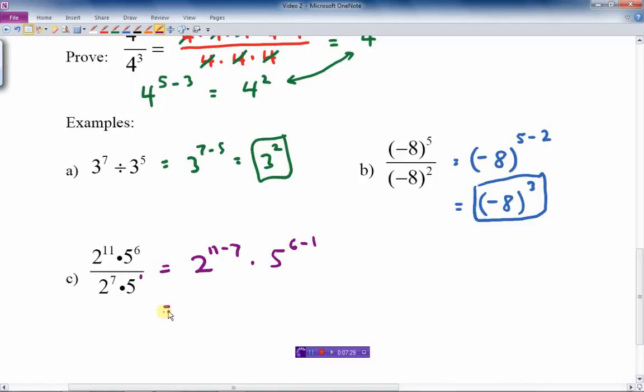Let's finish this off. 11 minus 7 is 4. So 2 to the 4 times 5 to the 5th is our expression. And we cannot, that's the exponential form. We're done. We're not asked to evaluate this.